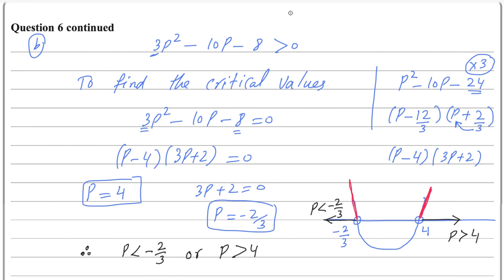For comparison, if the inequality were less than 0, you would choose the lower part of the graph, and the solution would be the values of p between minus 2 over 3 and 4. In the case of greater than, the solution is always the two outer regions. This completes part 2 of question number 6.